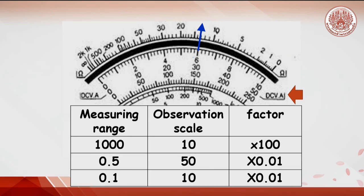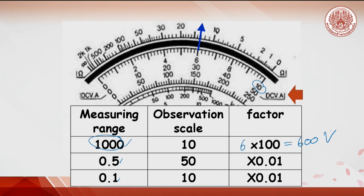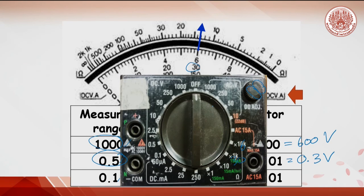For other measuring scales like 1000, 0.5, and 0.1: if measuring at 1000, look at the full scale of 10. The actual voltage is the reading times 100, so 6 times 100 gives about 600 volts. If the measuring range is 0.5, look at the scale of 50. After reading, multiply by 0.01 to get 0.3 volts. Finally, after reading, do not forget to turn the selector knob to off to maintain the battery in the multimeter.